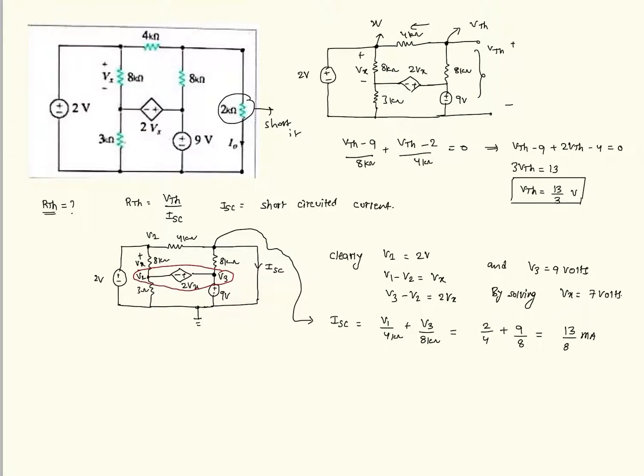So now as we know RTH is nothing but VTH by ISC. VTH is nothing but 13 by 3. ISC is nothing but 13 by 8. So clearly now 8 by 3 kilo ohm. Now this is RTH.